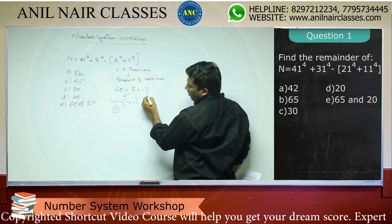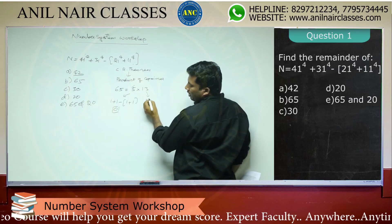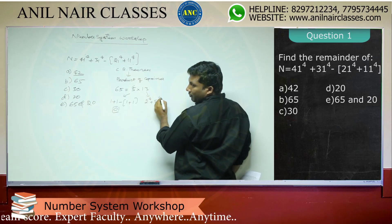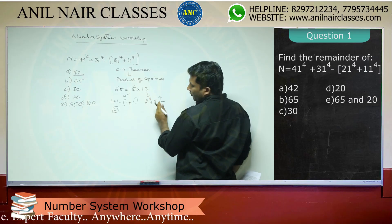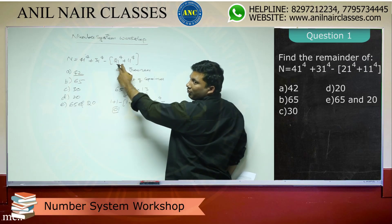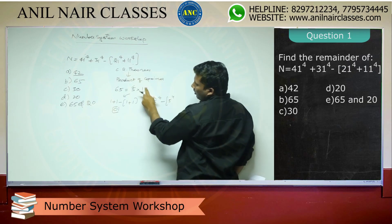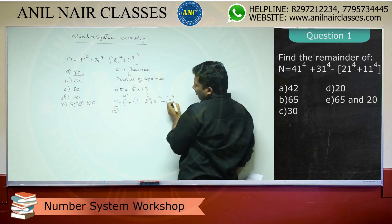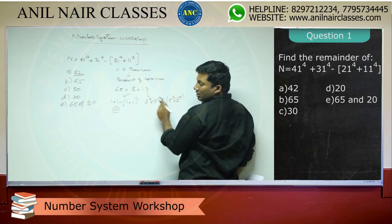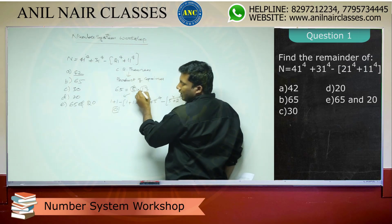Then checking divisibility by 13: 41 mod 13 = 2, so 2 to the power 4. 31 mod 13 = 5, so 5 to the power 4. 21 mod 13 = 8, giving minus 8 to the power 4, which equals minus 5 to the power 4. 11 mod 13 = 11, giving minus 2 to the power 4. The terms cancel out — it is divisible by 13.